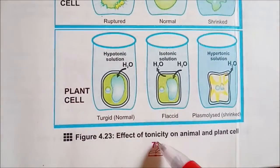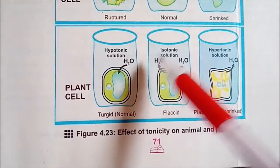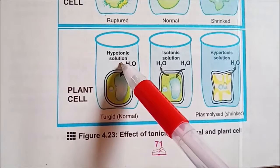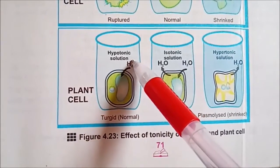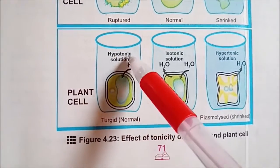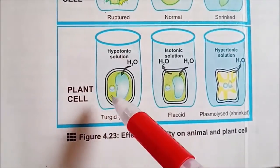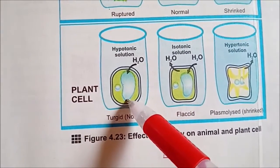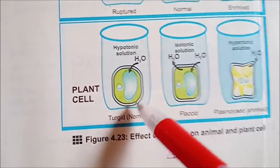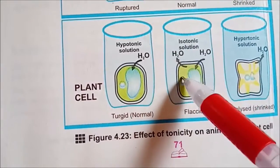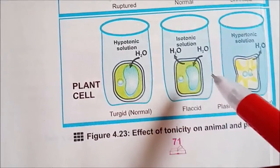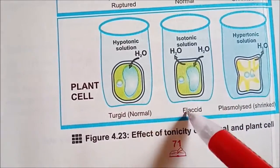Agar aap ise book mein dekhen to page number 71 par ek figure milegi jisme tonicity ka effect bataya gaya hai plant cell ke upar. Plant cell mein andar wali cell membrane ke bahar ek cell wall bhi maujud hai. Hypotonic solution mein plant cell rakhne par paani enter hoga — paani hamesha high water potential se lower water potential ki taraf jata hai, yaani kam gadhe solution se zyada gadhe solution ki taraf. So ye plant cell turgid ho jayega, pore plant mein turgidity aa jayegi. Isotonic solution mein net koi movement nahi hogi — plant cell shrink to nahi hoga lekin thoda dhila rahega.